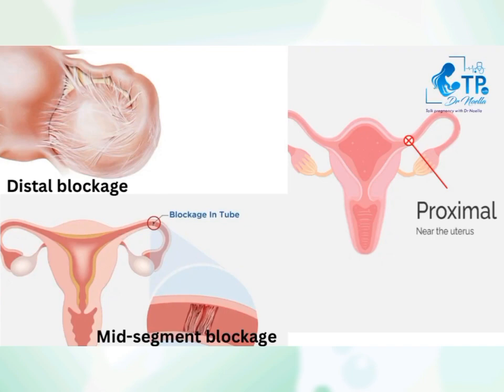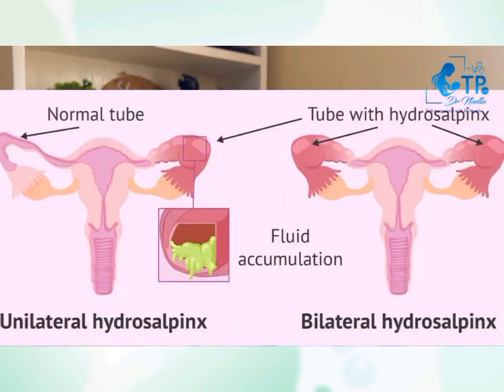What are the various types of blocked fallopian tube? We have the distal blockage, the mid-segment blockage, and the proximal blockage. For the distal blockage, it means it blocks at the end towards the ovaries. This is mostly due to hydrosalpinx, which is mostly caused by sexually transmitted infections like chlamydia and gonorrhea. It causes a collection of fluid at that level, resulting in blockage of the tube.